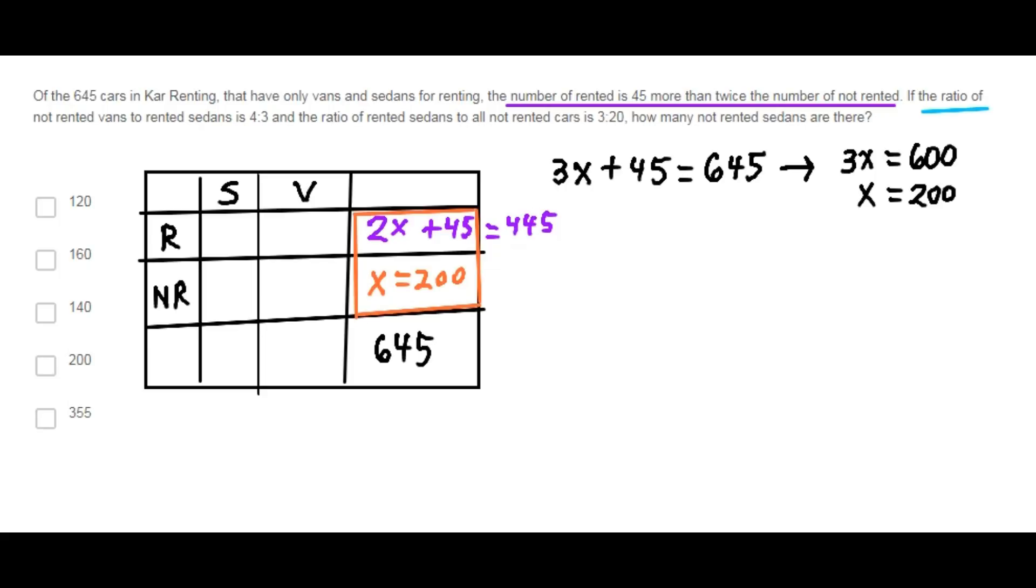The ratio of not rented vans to rented sedans is 4 to 3. Not rented vans are these ones. Let A be the number of not rented vans. And rented sedans are these ones, so let B be the number of rented sedans. They state that the ratio of A to B is 4 to 3.